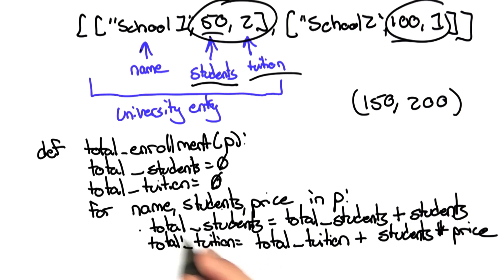So here, for each school, I update the number of students by simply adding the number of students to the total count, and I update the total tuition by simply adding the amount of students that are paying at this particular university to the total tuition. And in the end, I return both values, which you can do by simply adding the comma.